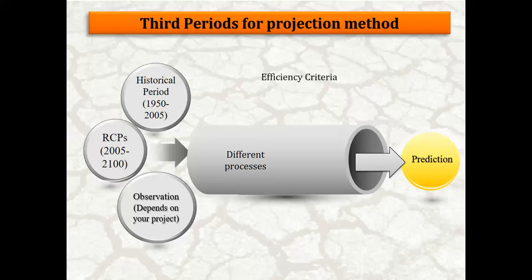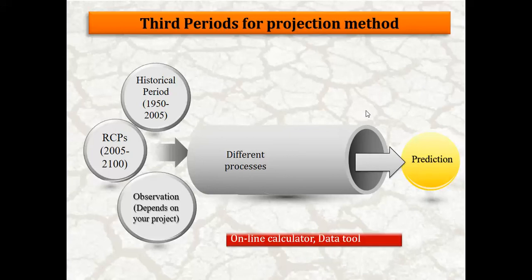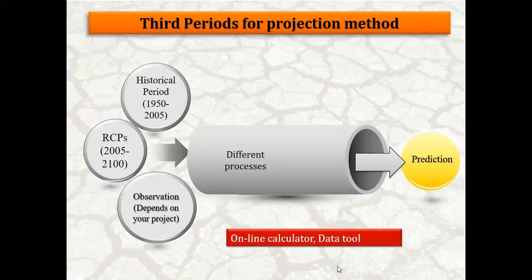In the evaluation process, check different efficiency criteria such as Nash-Sutcliffe, RMSE, R-score, d-index, and other indices. If you want to use these indices, you can use an online calculator. You can use these tools to make your evaluation and compare the model output with observation data.